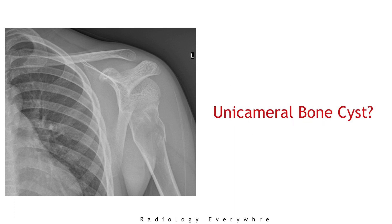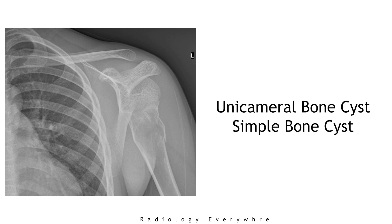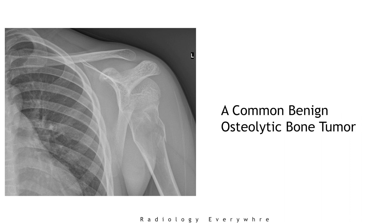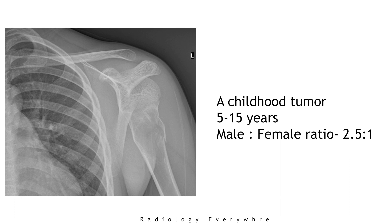What is a unicameral bone cyst? Unicameral bone cyst, also known as simple bone cyst, are common benign non-neoplastic lucent bone lesions mainly seen in childhood within the ages of 5 to 15 years. Less than 15% of cases are reported over age of 20 years, and the male to female ratio is 2.5 to 1.